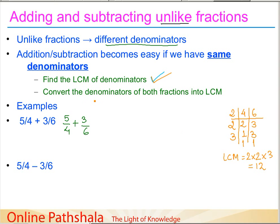Now we have found the LCM of the denominators, which is twelve. We need to convert the denominators of both fractions into twelve. For the first fraction five by four, we multiply four by three to get twelve in the denominator. Since we need an equivalent fraction, we multiply the numerator by three as well.